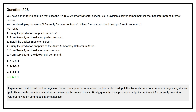First, install Docker Engine on Server1 to support containerized deployment. Next, pull the Anomaly Detector container image using Docker Pull. Then, run the container with Docker Run to start the service locally. Finally, query the local prediction endpoint on Server1 for anomaly detection without relying on continuous internet access.